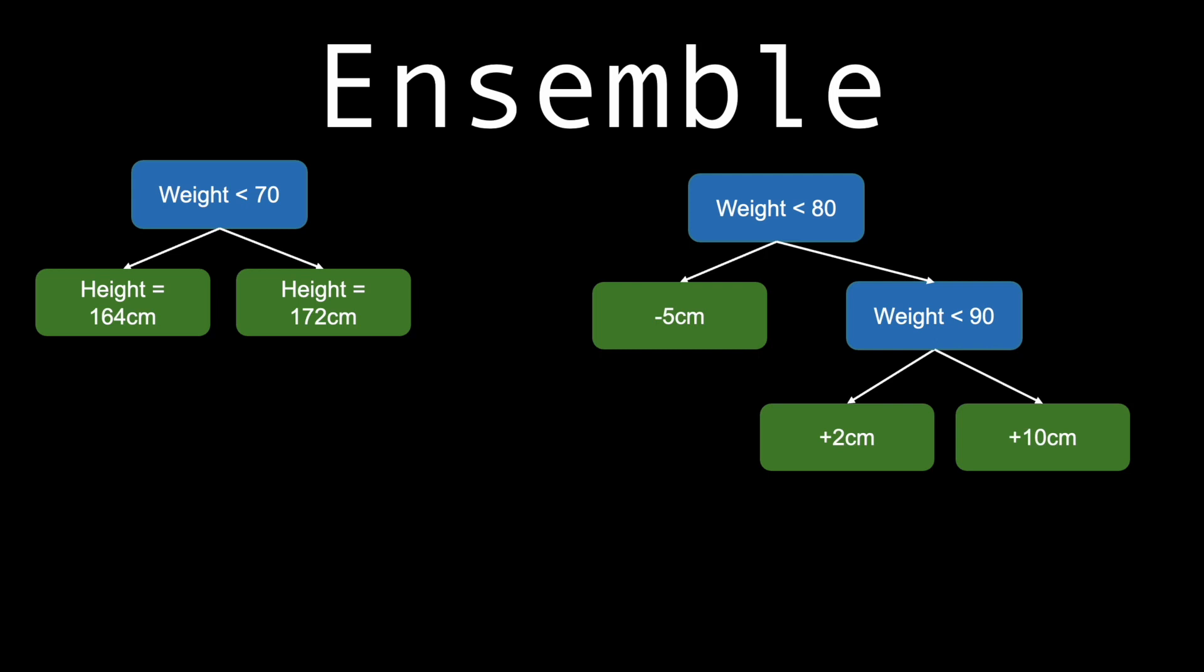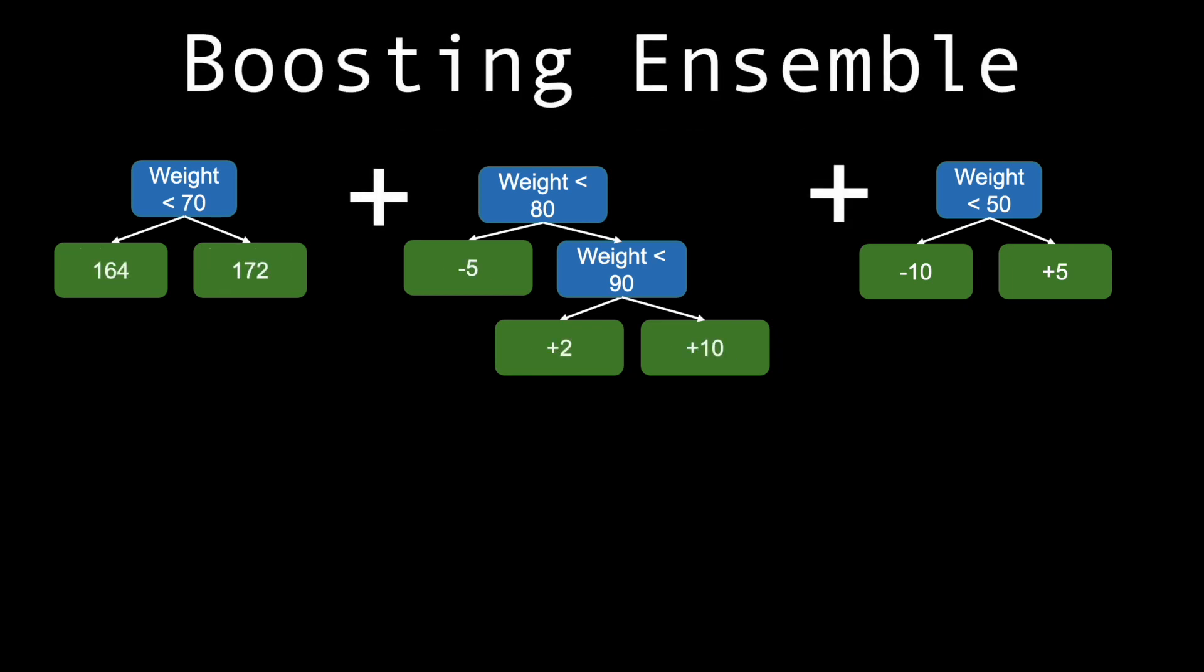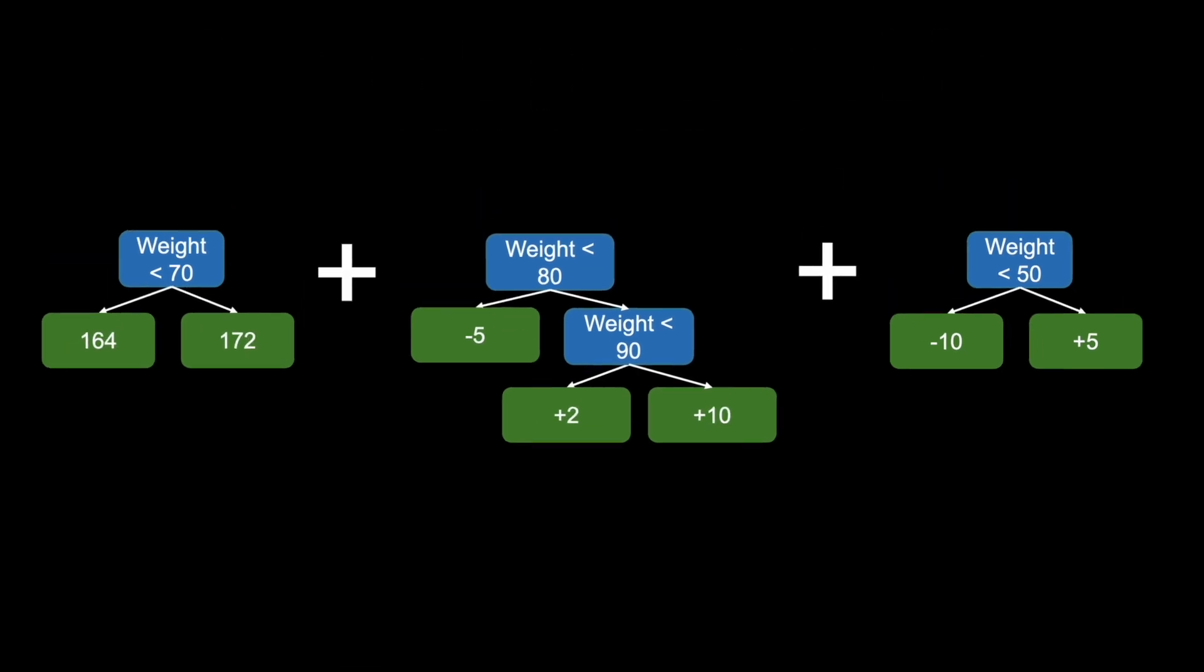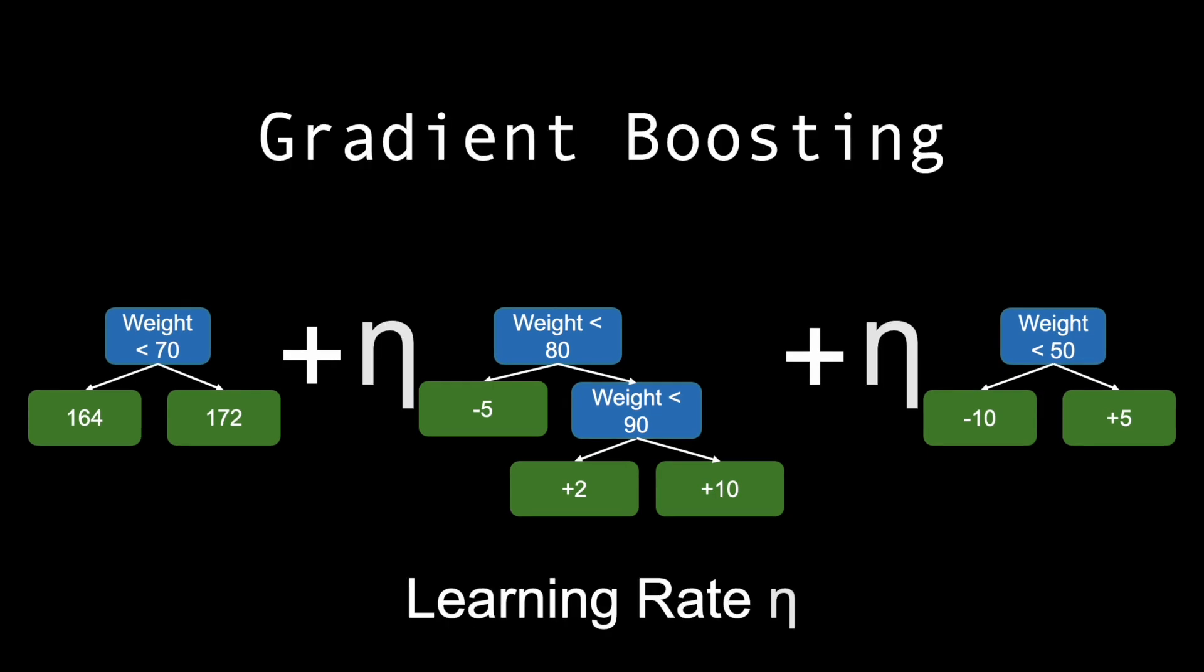XGBoost uses a boosting ensemble model, hence the word boost, where it trains multiple trees one after another and each tree improves upon the previous by reducing the loss of the current ensemble. Each tree's predictions are then combined, and in the case of gradient boosting, with a learning rate learnt from another dataset assigned to each tree.